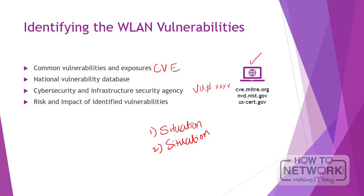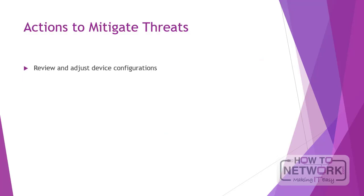To determine the risk and impact of a vulnerability, you can refer to the National Vulnerability Database (NVD) to glean information. Not only wired networks but also wireless networks are prone to multiple types of threats, and there are various mitigation methods that can be used. Let's look at some of these threats and how they can be mitigated.